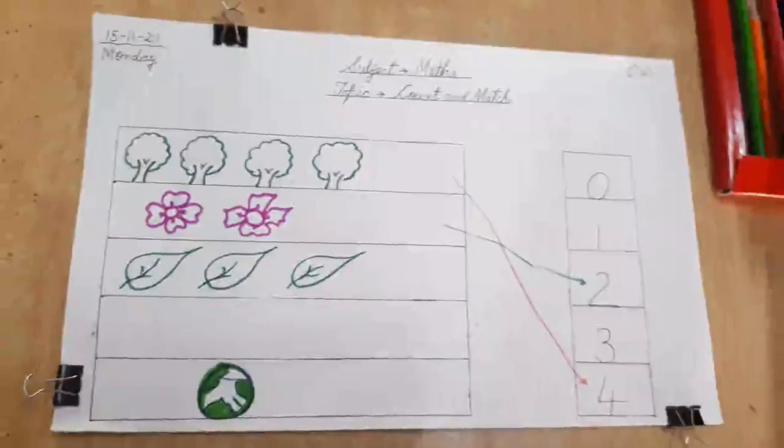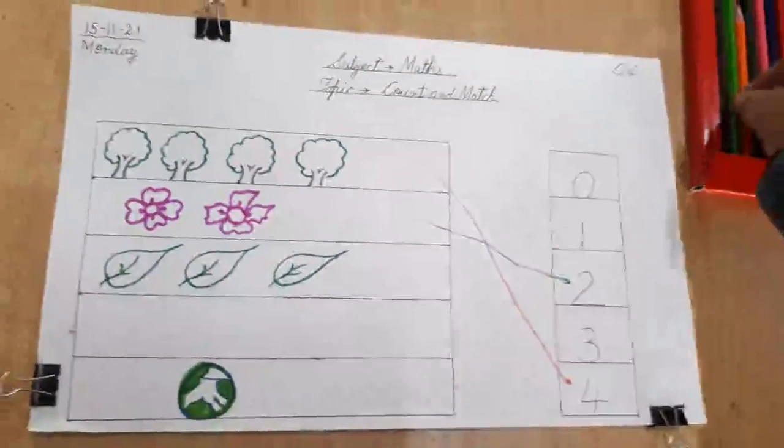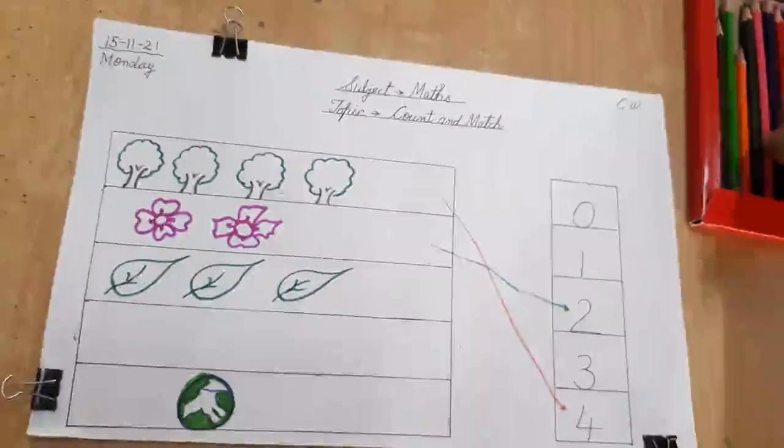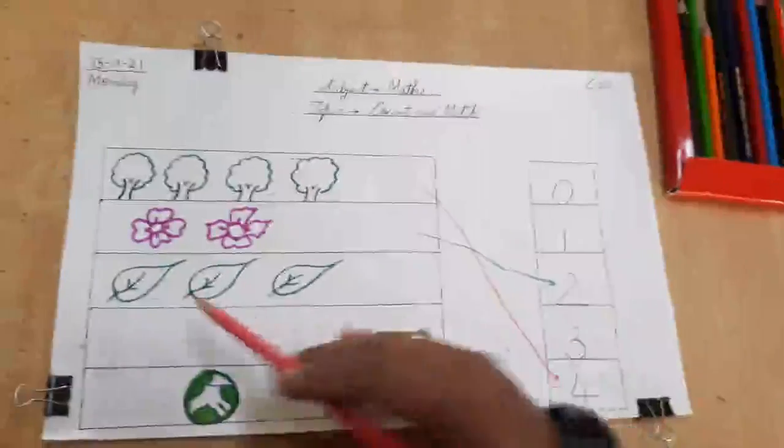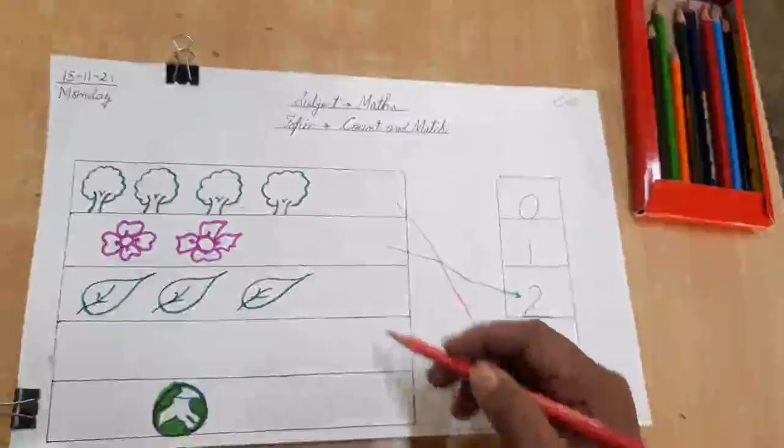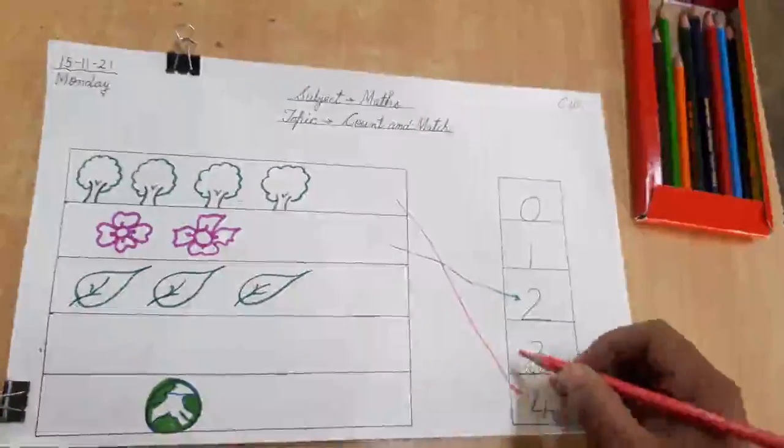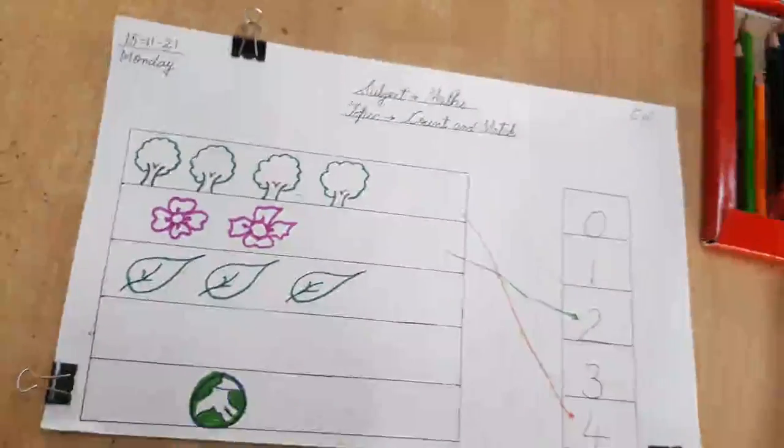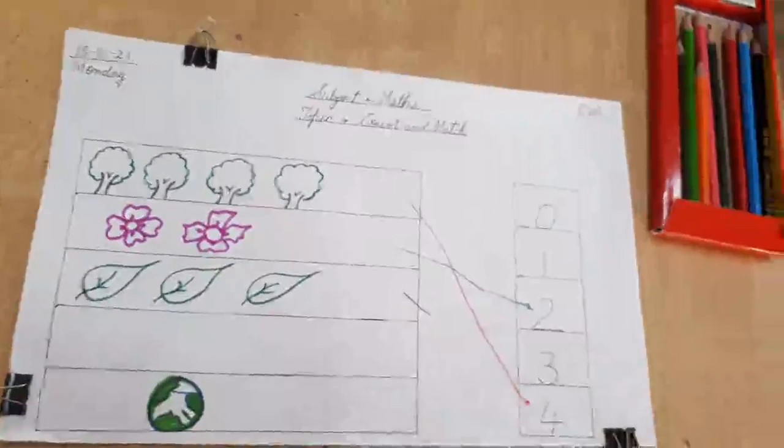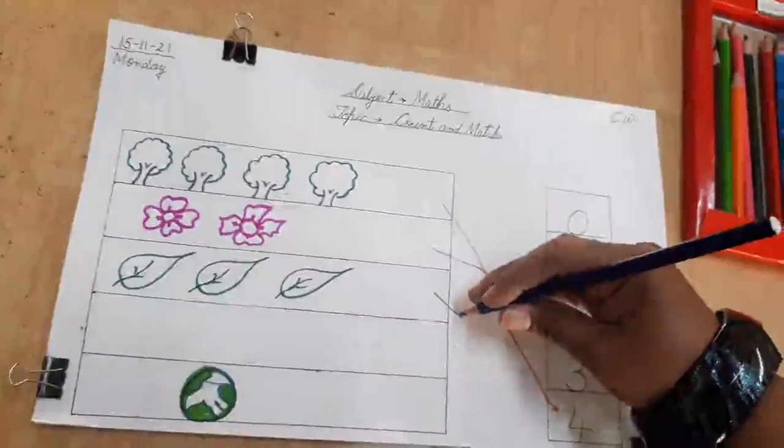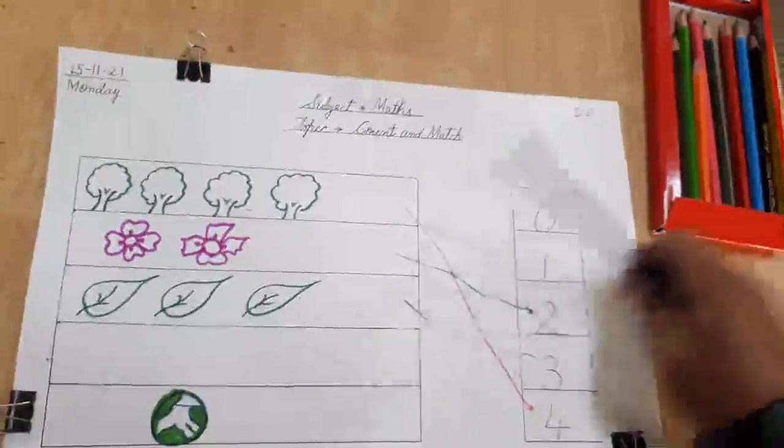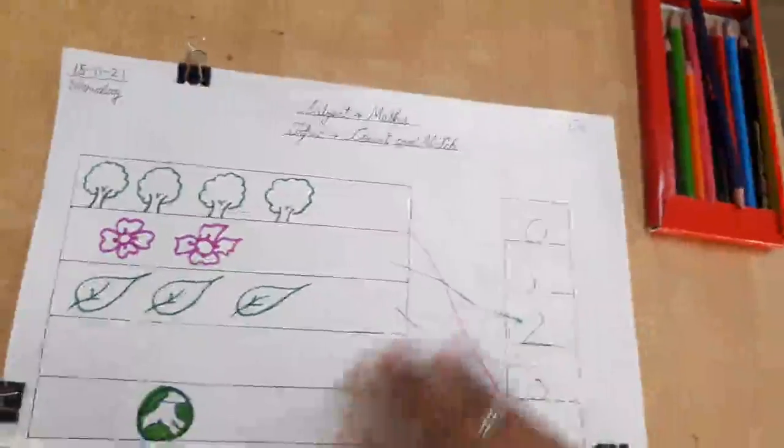Now, next we have leaves. So, what you have to do? Count how many leaves we have. We have 1, 2, 3. 3 leaves. So, let's match it with number 3. I'll take a different color. Like this. You will match it with number 3. Is that clear to everyone?